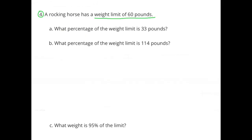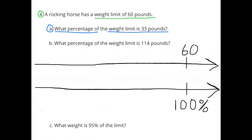Number 4: a rocking horse has a weight limit of 60 pounds. A: what percentage of the weight limit is 33 pounds? I made a double number line. I know that 60 pounds is 100% of the weight limit. 60 pounds divided by 60 equals 1 pound.